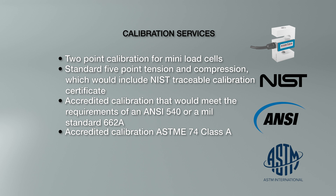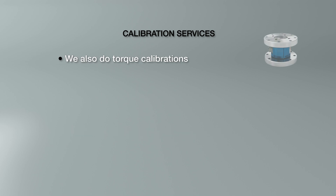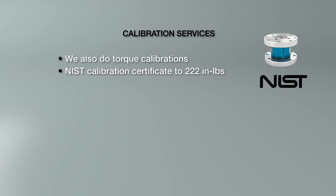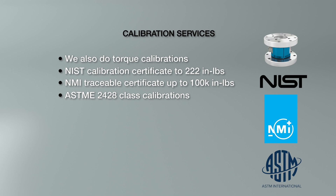The ASTM E74 Class A is a more involved calibration: 10 points, three runs, with a rotation in between each run. It includes curve fit plots, coefficients, and a lower load limit on the calibration certificate. We also do torque calibration here at Interface. The standard calibration is five points tension and compression, including a NIST-traceable calibration certificate to 2,222 inch-pounds, and NMI-traceable certificate above that up to 100k pound-inch. We also have an accredited option — NIST-traceable to 2,200 inch-pounds and NMI-traceable to 100k — as well as ASTM E2428 class calibrations, similar to the E74 for a force transducer.